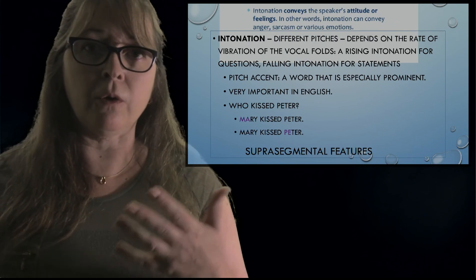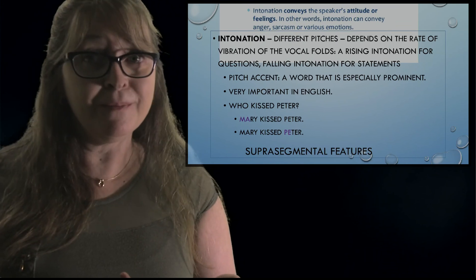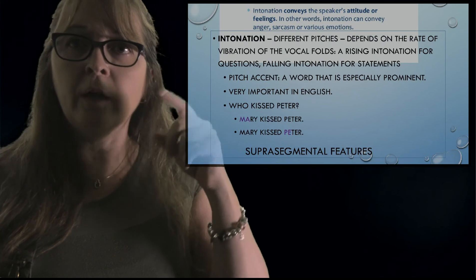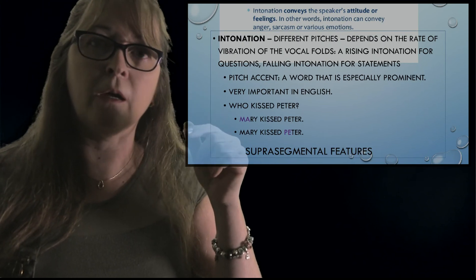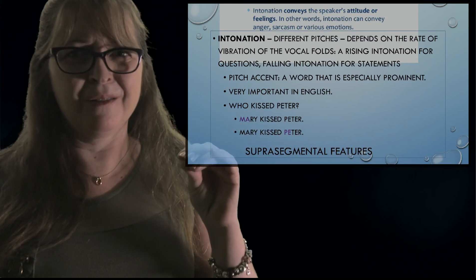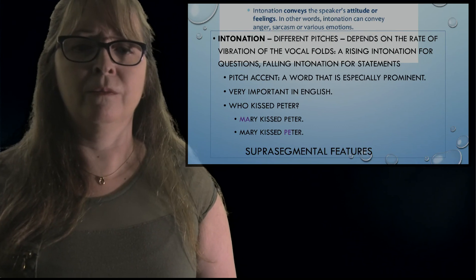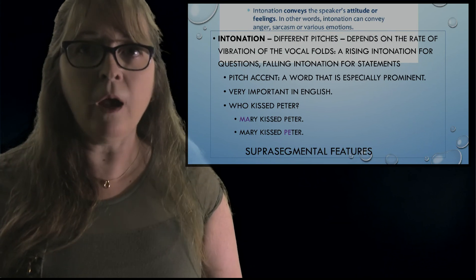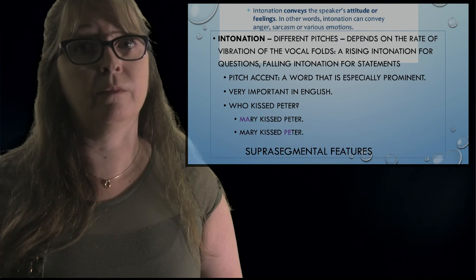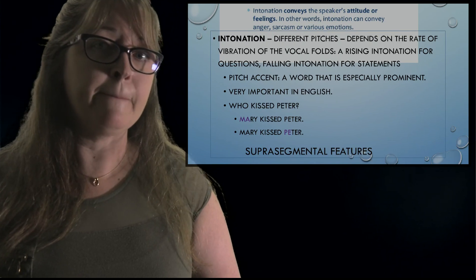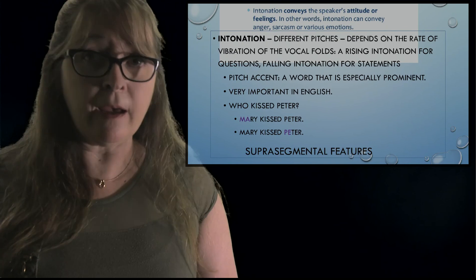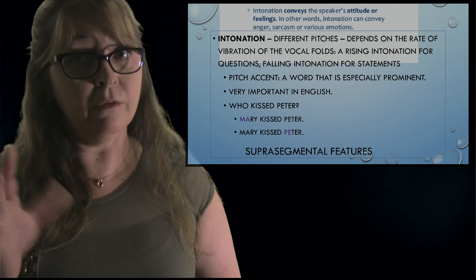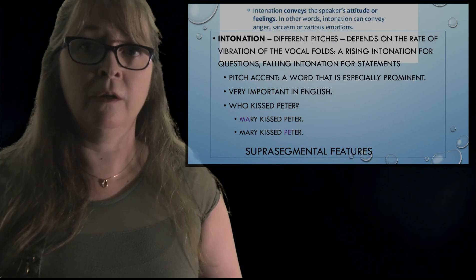Intonation can also show sarcasm or a range of emotions. In English, we don't have tones like Chinese or Thai, but we have intonation which is really important. For example, if my kid says 'Mom, I said I don't want to do it' with a certain tone, it means they don't want to but they know they better. But with a different intonation — 'Mom, I said I don't WANT to do it' — that means they're not doing it. Same words, same sounds, different intonation.